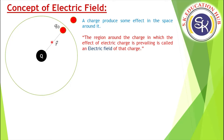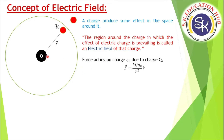The electric field can be measured with the help of indirect measurement. What does indirect measurement mean? First of all, we need to find out the force. We find the force acting on charge q0 due to charge capital Q.